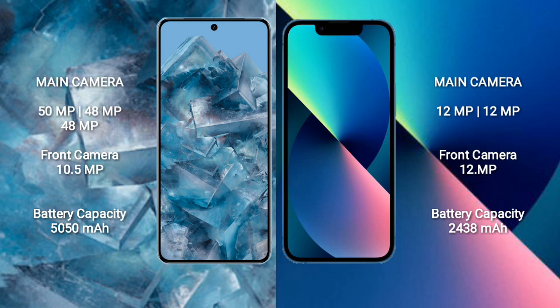Google Pixel 8 Pro features a rear triple camera setup of 50MP plus 48MP plus 48MP, and a front camera of 10.5MP. iPhone 13 mini comes with a rear dual camera setup of 12MP plus 12MP, and a front camera of 12MP.